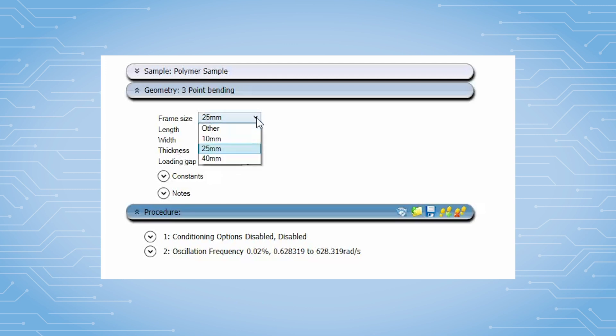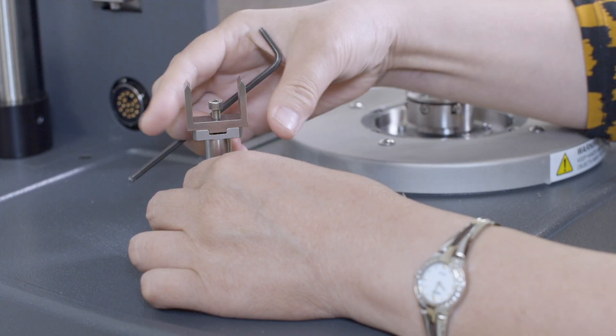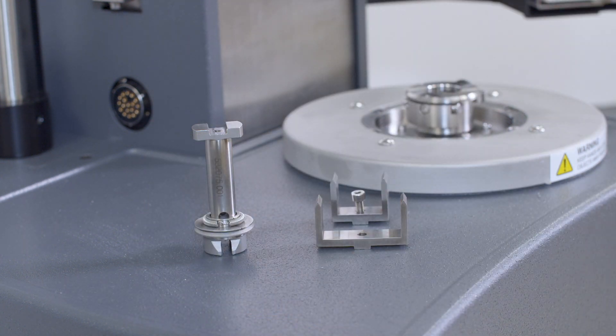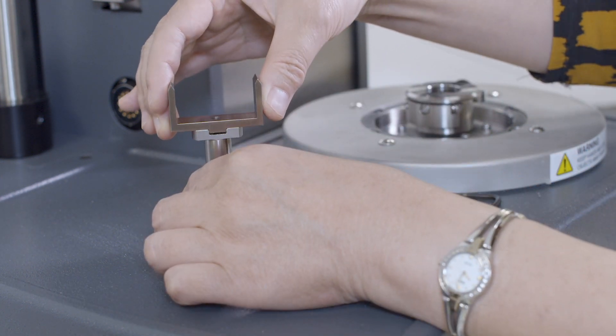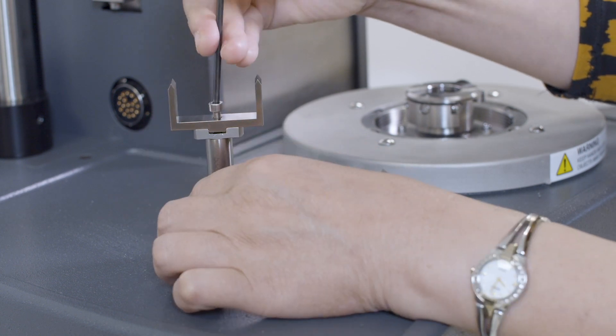To ensure an accurate bending test, the sample length to thickness ratio needs to be equal to or greater than 10 to 1. Since this sample thickness is 3.2 millimeter, we shall select to use the frame size of 40 millimeter for the measurement.